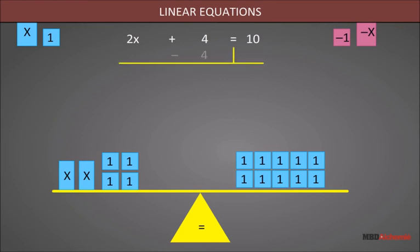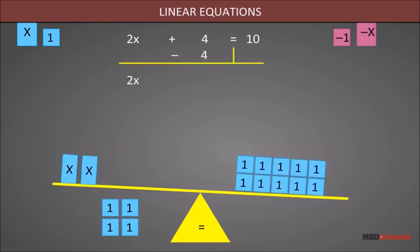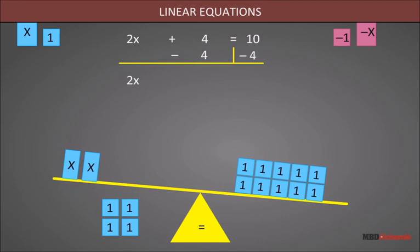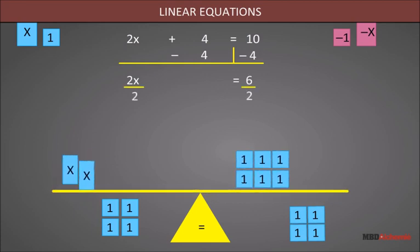Let's consider an equation 2x + 4 = 10. Now we subtract 4 from the left-hand side. The equation becomes unbalanced. To balance it, we subtract 4 from the right-hand side too. Hence we get 2x = 6. Now we divide both sides by the coefficient of x, that is 2. Therefore we get x = 3.